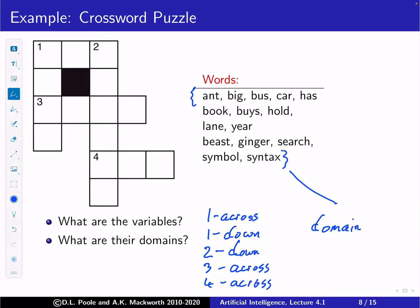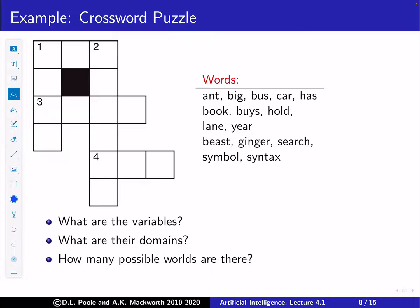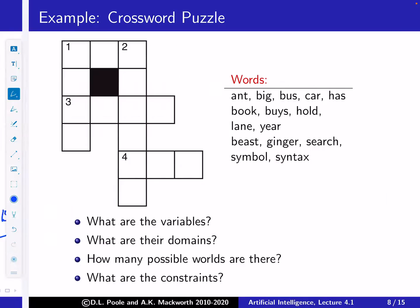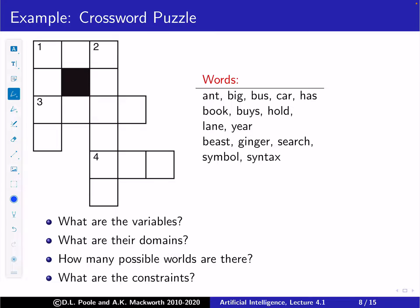There's another representation of this same crossword where the variables are each individual square and the domain is the set of all letters of the alphabet — multiple ways to represent the same CSP. How many possible worlds are there? There are 15 words, and five variable slots, so 15 to the fifth. The constraints are that intersecting slots must share the same letter where they meet.